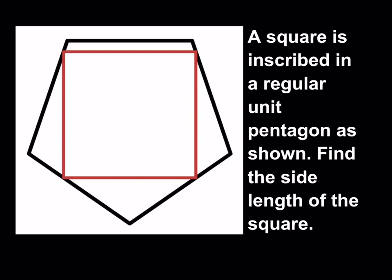A square is inscribed in a regular unit pentagon as shown. Find the side length of the square. We have a unit pentagon — all sides are equal length and they're one — and each angle is congruent.